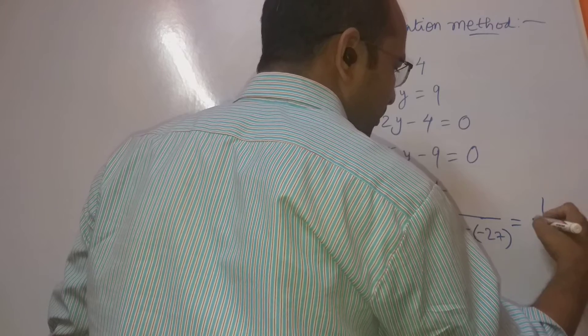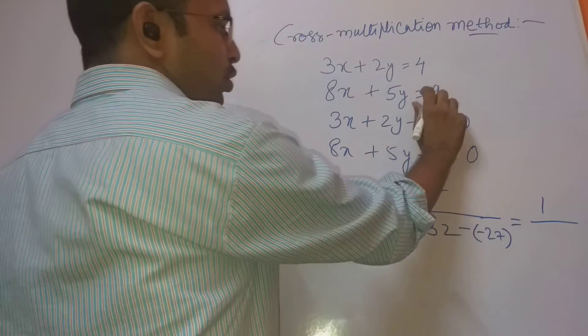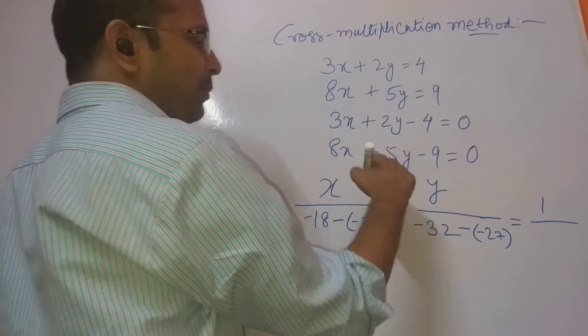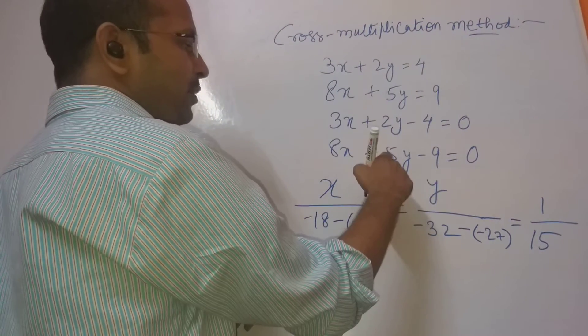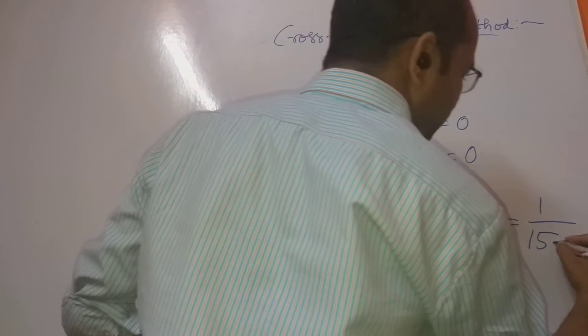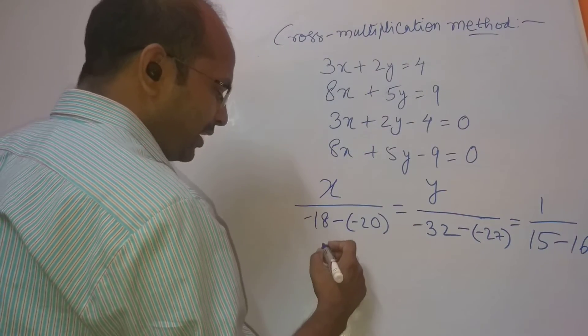And that equals to 1 by... you close this now. 3, 5 by 15. 3, 5 by 15, minus 8, 2 is minus 16. 15 minus 16. What are we getting here?